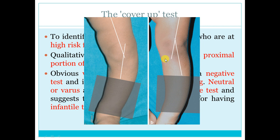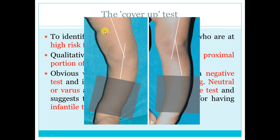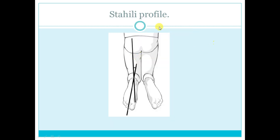A more relevant, sensitive, and specific test is the cover-up test. From the history you determine if it is progressive, stationary, or regressive. If it could be pathological, you consider X-ray. The cover-up test: cover the distal tibia — in a varus limb, if the proximal tibia aligns in valgus with the femur, this is mostly physiological varus and no X-ray is needed. If the proximal tibia is in varus relative to the femur, this is mostly pathological and will need X-ray.